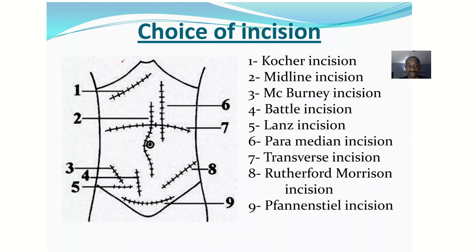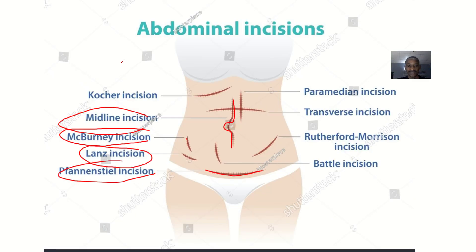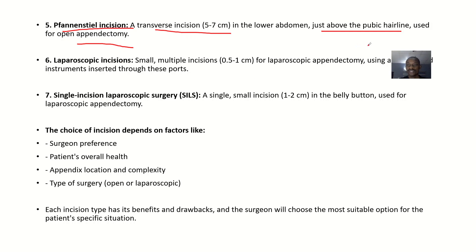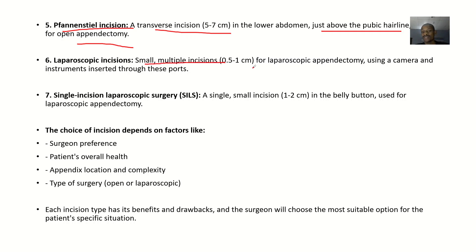Then we have laparoscopic incisions. You need to make small holes just to insert the laparoscope. These are small multiple incisions, about 0.5 to 1 centimeter, and they are done for laparoscopic appendectomy. You insert the laparoscope, which has a camera, and it aids you in your surgery.